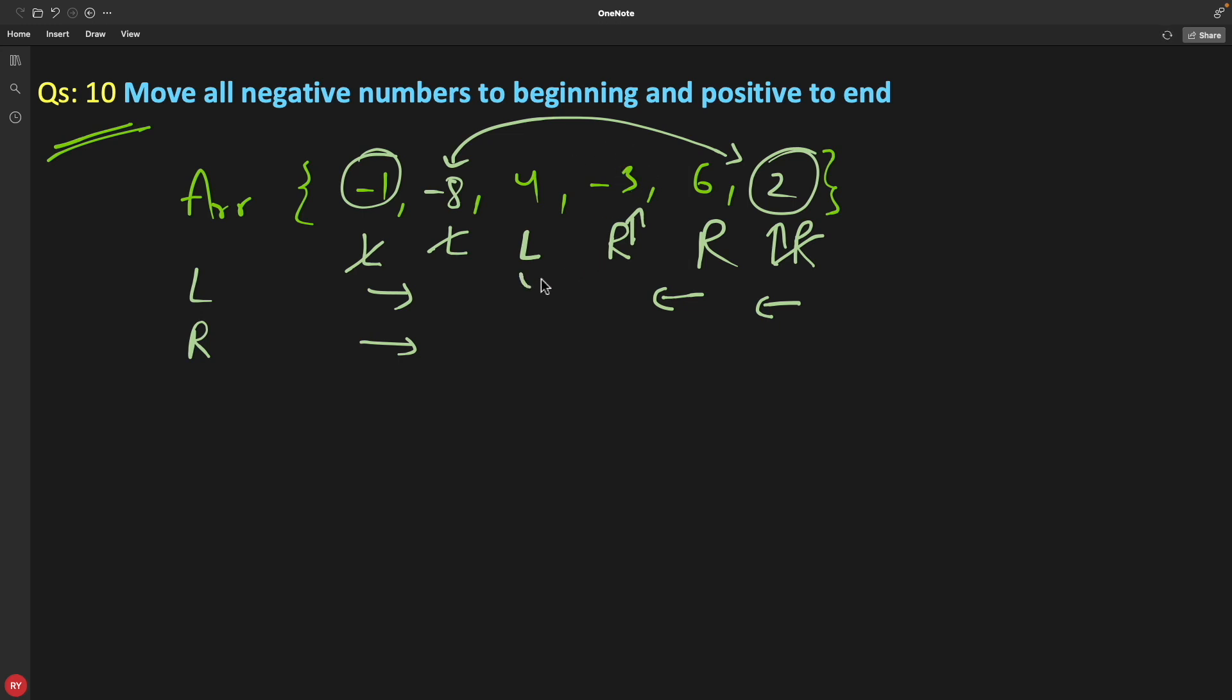And then you will check L and R. This is negative and this is positive. This is the exact stage where you will swap, so you will swap it. It will look like this, and see we have minus 1, minus 8, minus 3, 4, 6, and 2.